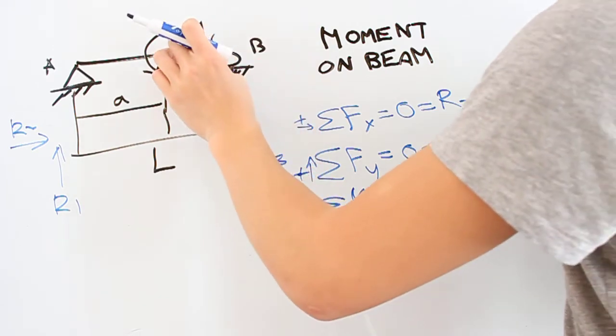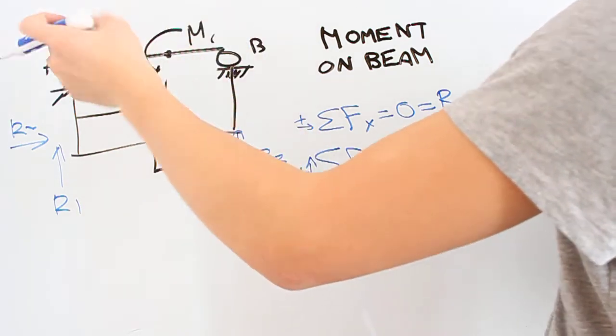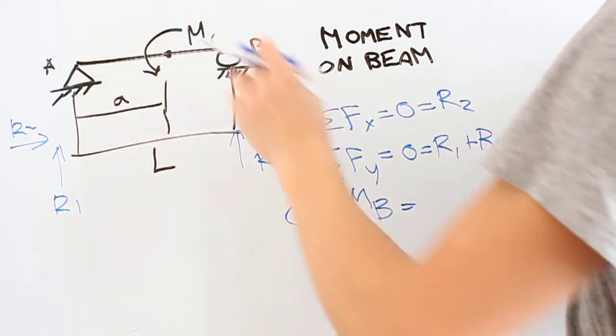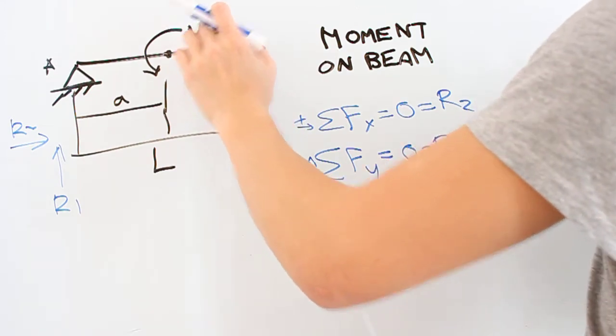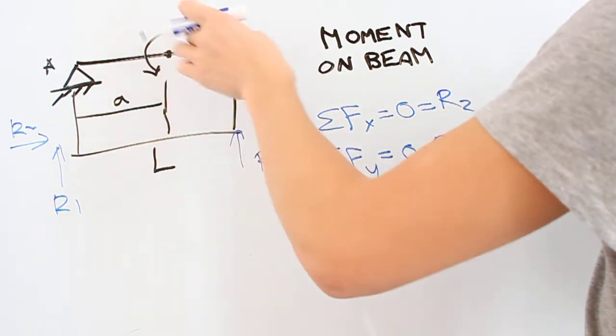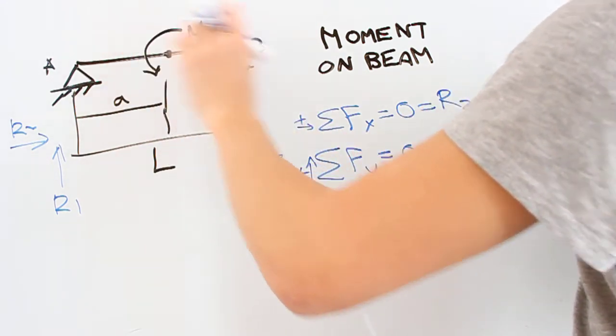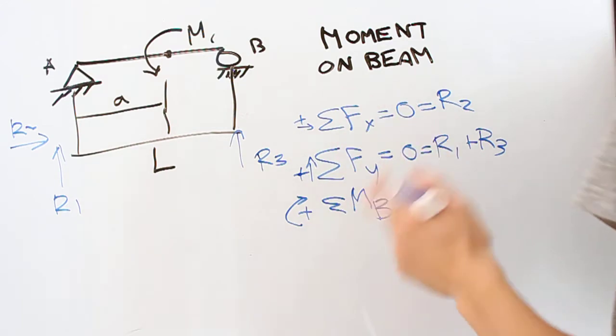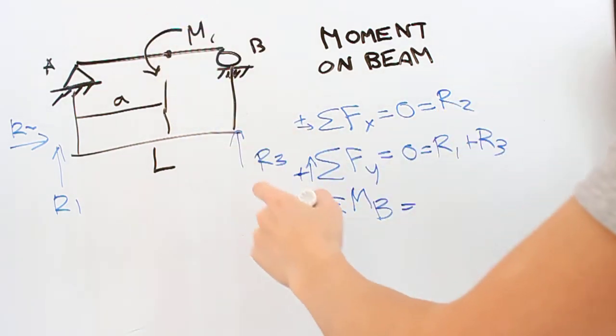But this moment tends to transfer itself across the beam in the same constant value. So we're going to write M1 in our equation even though it's not a moment about this point. It transfers itself so that this rotation sense here is going to be the same rotation sense here. So M1 is negative in our sense.